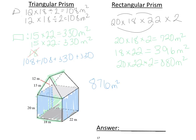Adding up 720 plus 396 plus 880 tells us the surface area for the rectangular prism is 1,996 meters squared. When we combine the triangular prism and the rectangular prism together, we get a total surface area of 2,872 meters squared.